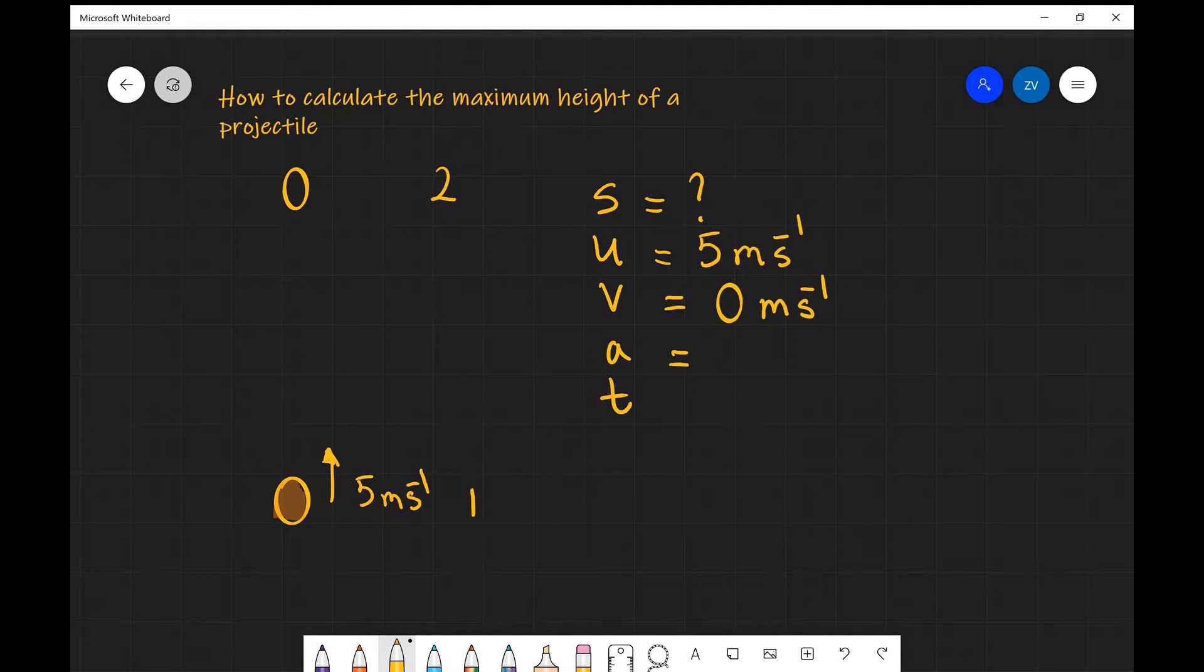The acceleration in this case, gravity, is actually doing work against the direction of motion, so it is going to be negative acceleration. In other words, the object is slowing down and the acceleration will be negative g, which is minus 9.81 meters per second squared.